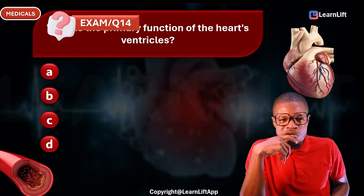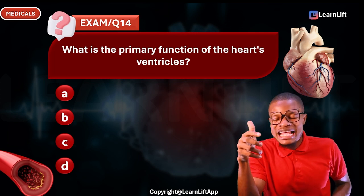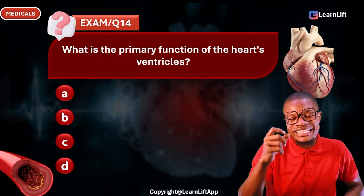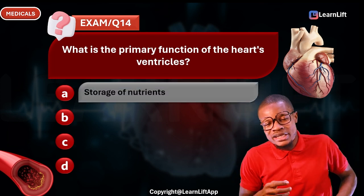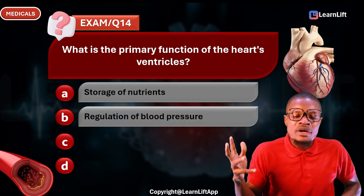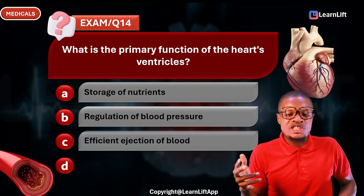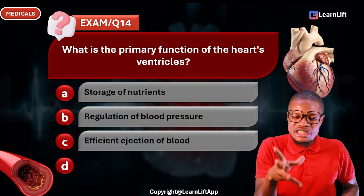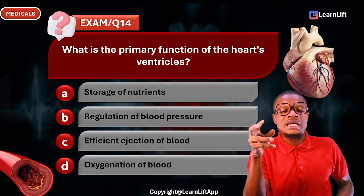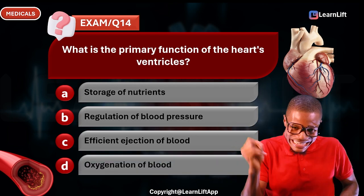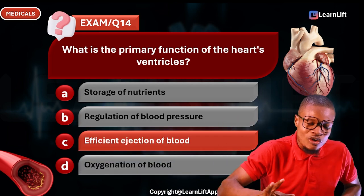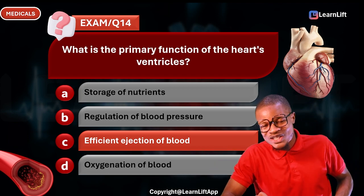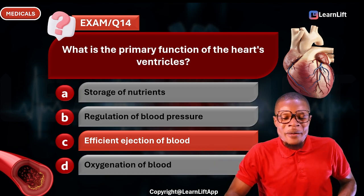Question fourteen: What is the primary function of the heart ventricles? Option A: storage of nutrients. Option B: regulation of blood pressure. Option C: efficient ejection of blood. Option D: oxygenation of blood. The correct answer is Option C — efficient ejection of blood, which is seen majorly in the left ventricle.